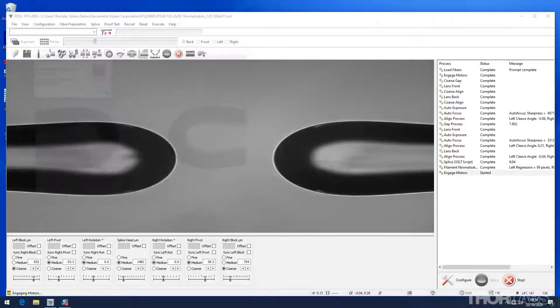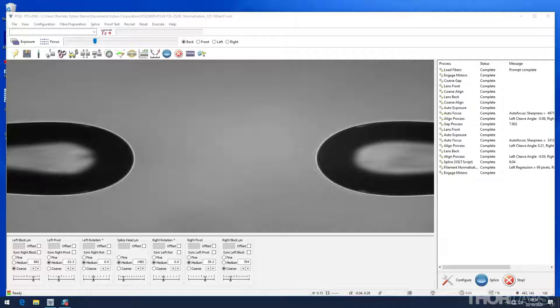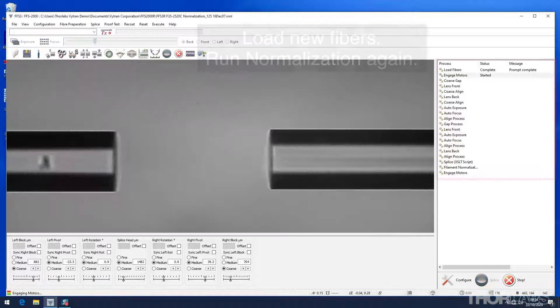To run the normalization process again, simply take out the fibers, remove the rounded ends and prepare a new pair of fibers.